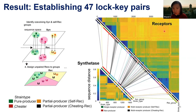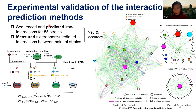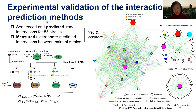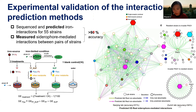We had to validate this experimentally since everything here is a prediction from genomes. We have satisfactory validation from lab postdocs and collaborators. The accuracy of predicting whether two strains can have iron interaction — whether it is positive or negative — is about 90%. About 10% are not predicted correctly, but this gives us confidence: if it works for about 50 strains, it probably works for 2,000 strains.